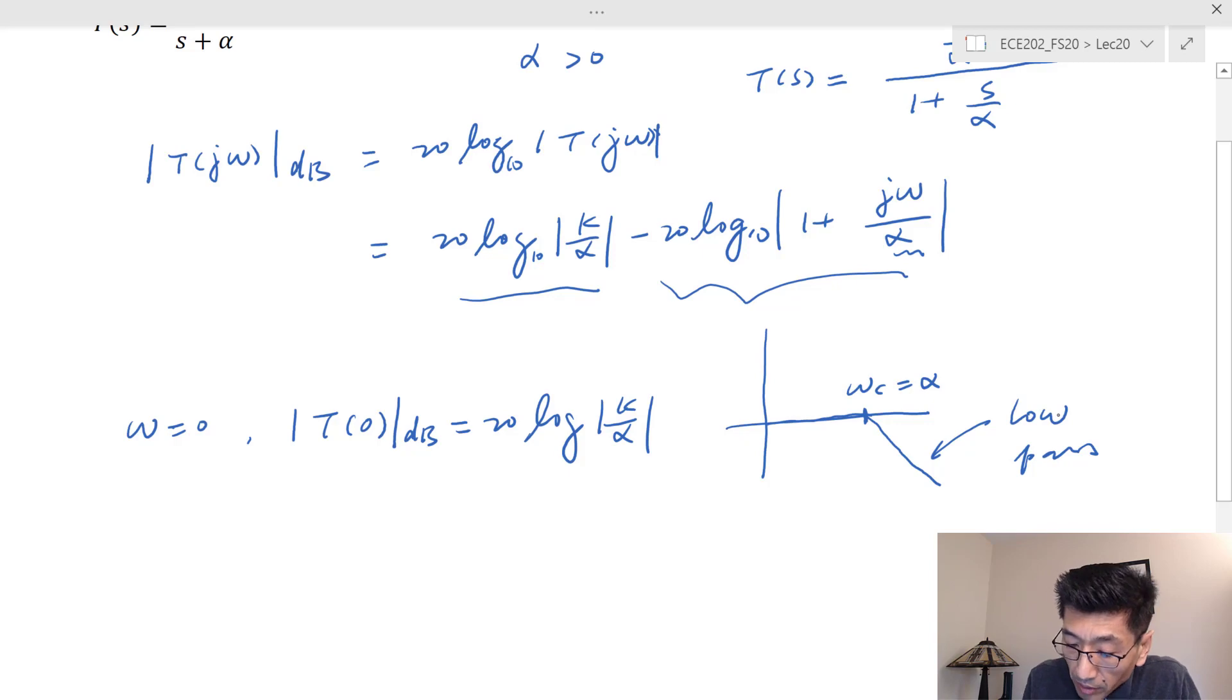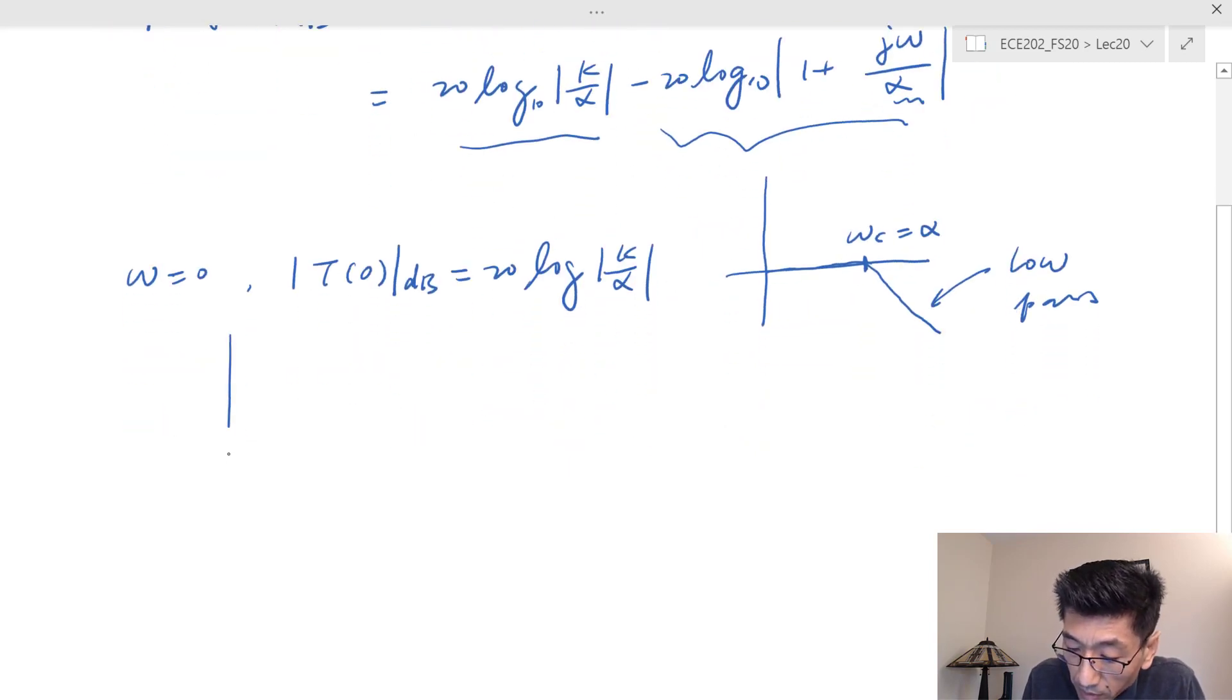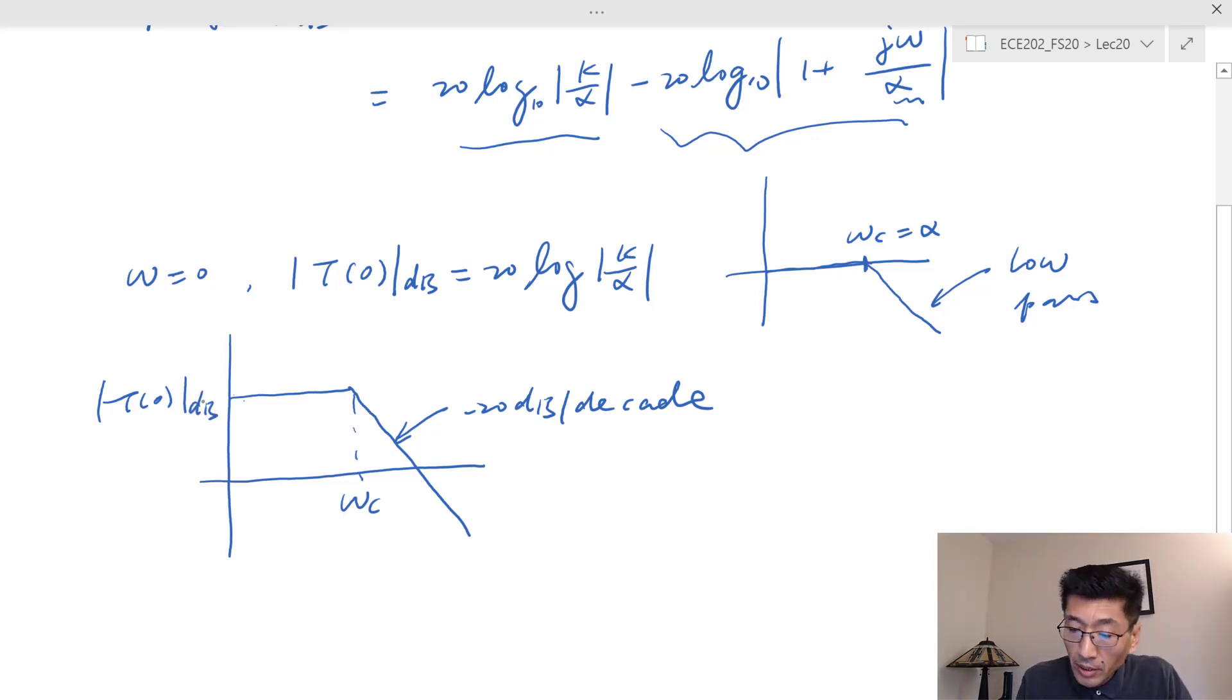If I include that gain, the plot would be something like this. This is going to be ωc, and here we have negative 20 dB per decade slope. The gain here is going to be T(0) in dB. This is the shape, and I'm plotting T(jω) in dB versus omega. From the shape we can see this is going to be the low-pass filter.